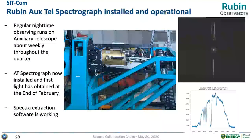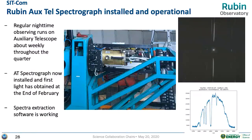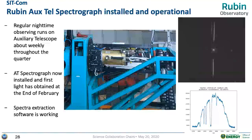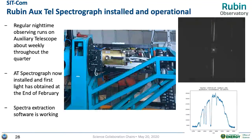The AuxTel spectrograph has been installed as part of that system test. We are getting data from it, and Merlin and company including Robert Lupton are actively working on the software to analyze the data. The performance looks good. Technically I would call the system operational; the next step is extracting the spectra and converting those spectra into the calibration data product of the atmospheric transmission function.